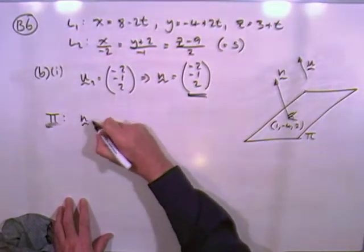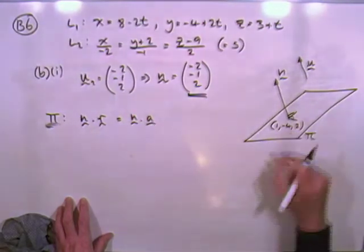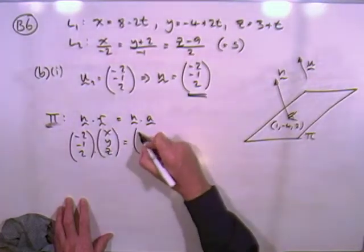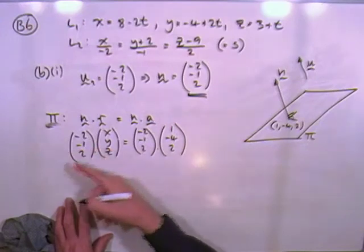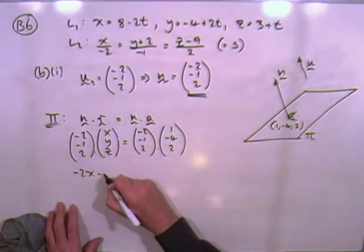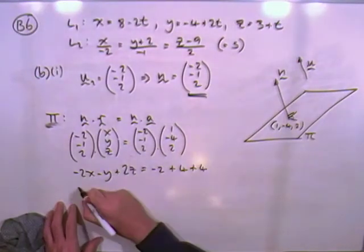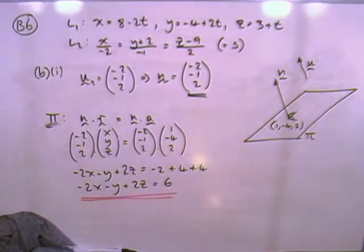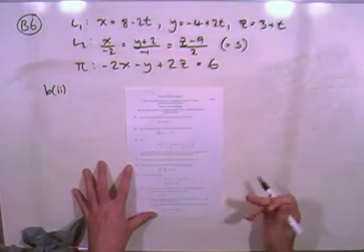Right, so to get the plane pi, we've got the normal, dot R, R being the position vector of any point on it, will be the normal dot A, any given point on it. So putting these numbers into it, then we've got these two scalar products, which you just have to work out. So that's going to give you a Cartesian form over here with the coordinates, and then this wee bit of arithmetic will get the constant at the end of it. So that's going to come to 6. So there you are. That's the equation of the plane.